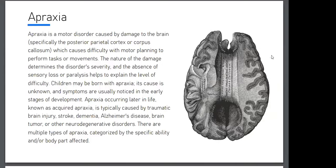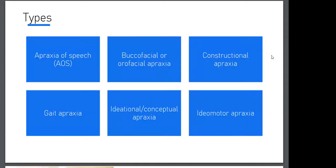There are multiple types of apraxia, characterized by the specific ability or body part affected. We have six types: apraxia of speech, buccofacial or oral apraxia, constructional apraxia, ideational apraxia, ideomotor apraxia, and limb-kinetic apraxia.